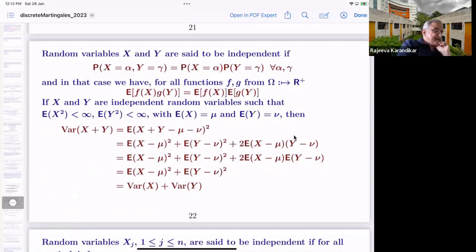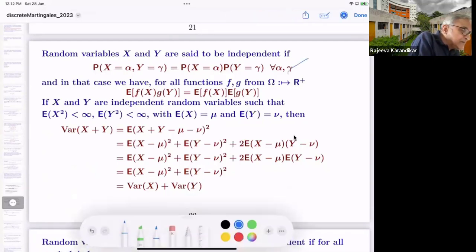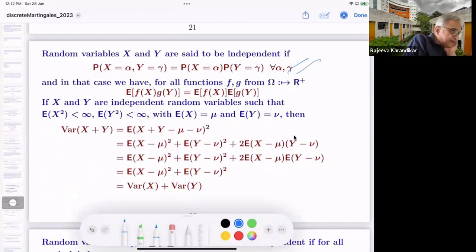If they are independent, if this holds, then one can verify that for all functions F and G from Ω to R⁺, the expected value of the product of F(X) and G(Y) becomes the product of expectation of F(X) and expectation of G(Y). This is a trivial computation for countable space Ω, and in general you can take the product measure and on product measure this will work.